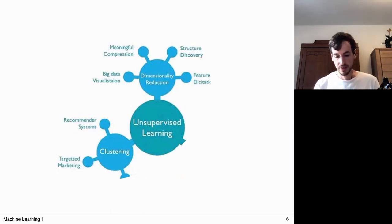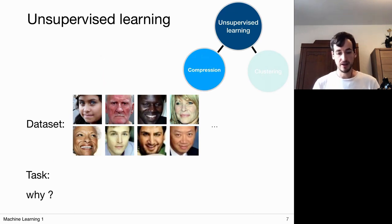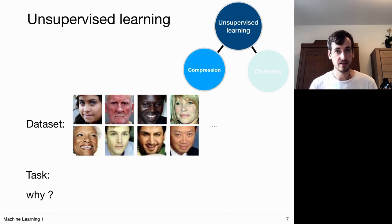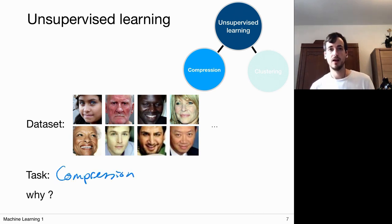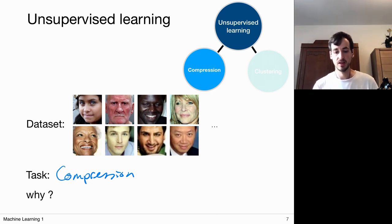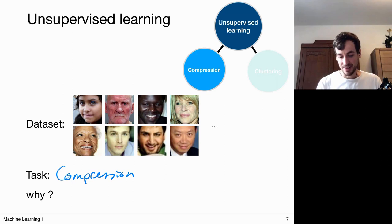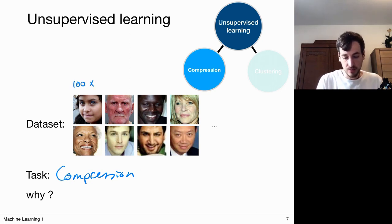Now let's move on to unsupervised learning methods. In unsupervised learning I have data but no corresponding labels, yet we can devise algorithms that solve useful tasks. One such task is compression. Imagine you're running a website with thousands of users and each user has a thumbnail avatar image you need to save on your server. You want to spend as little money as possible, so you can only afford a server that can save a couple of megabytes. You cannot afford to save all these images, which in this example are of size 100 by 100, so you want to reduce the amount of data stored.